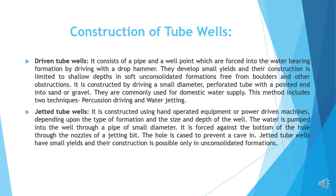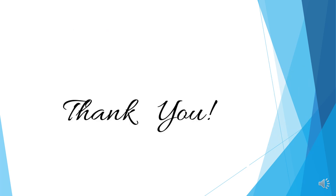Jetted tube wells are constructed using hand-operated equipment or power-driven machines, depending upon the type of formation and the size and depth of the well. The water is pumped into the well through a pipe of small diameter. Jetted tube wells have small yields and their construction is possible only in unconsolidated formations. That was all for today. Thank you.